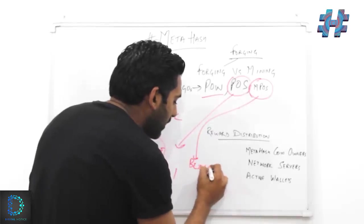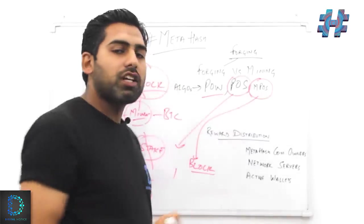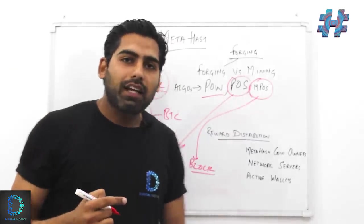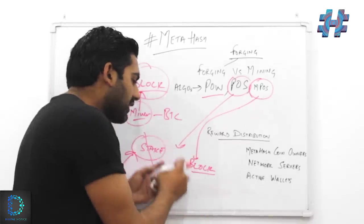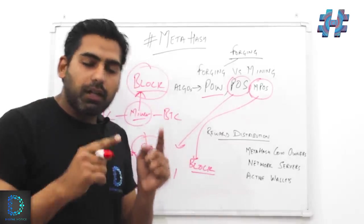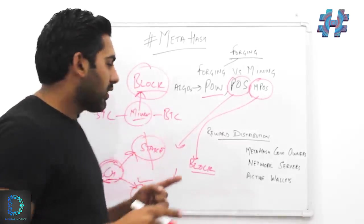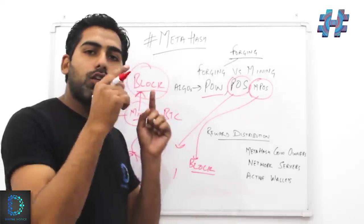Here in the case of multi-proof-of-stake, what exactly is happening is that every single participant who wants to be a block generator, they are coming together and they together are forming a block.